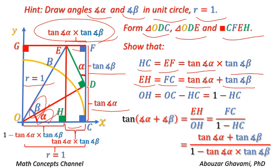Also show that the length of side EH equals to the length of side FC in rectangle CFEH, which equals tangent of angle alpha plus tangent of angle beta. Also show that the length of side OH equals to length of side OC minus length of side HC, where length of side OC equals the radius of the unit circle, equal to 1. Then write the equation for tangent of angle alpha plus angle beta in right triangle OEH as the length of front side EH divided by adjacent side OH.